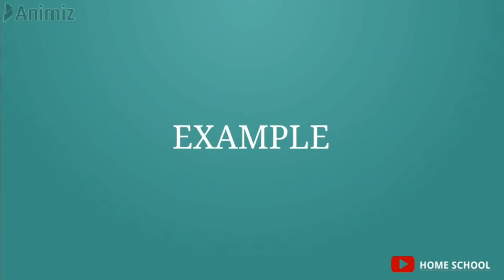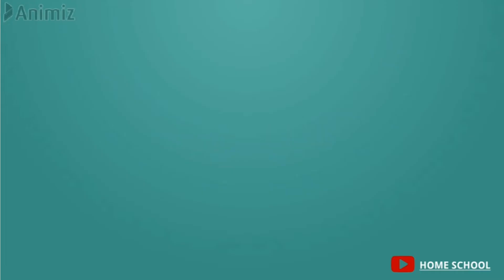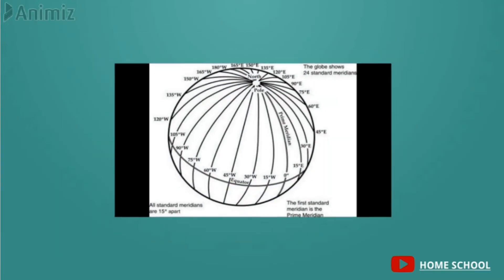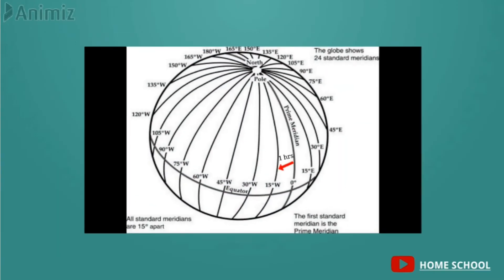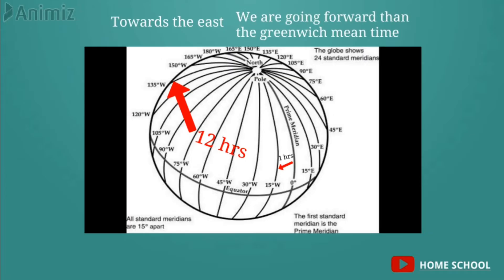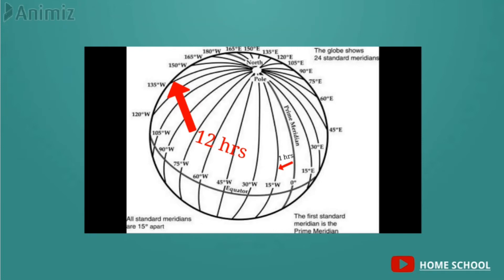Let me show you an example. The Earth takes one hour to move 15 degrees and 12 hours to move 180 degrees. If we go towards the east we are going forward of Greenwich Mean Time, and when we go to the west we are going behind Greenwich Mean Time.